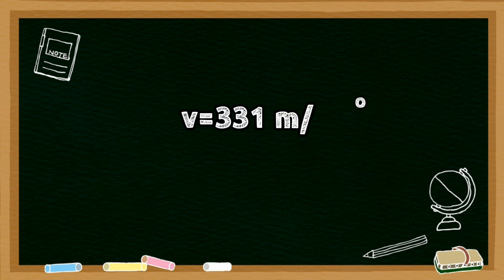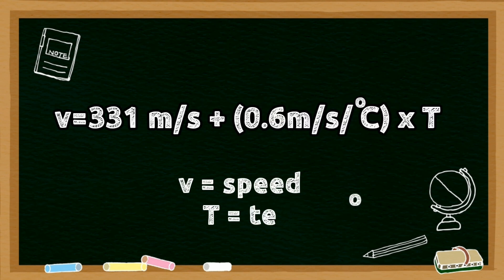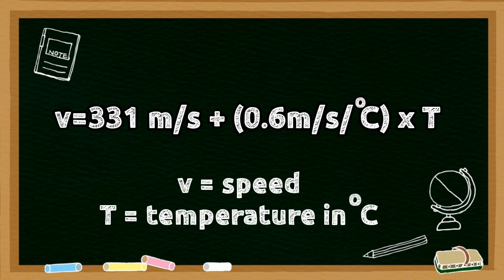This can be expressed as velocity equals 331 meters per second plus 0.6 meters per second divided by degree Celsius times temperature.